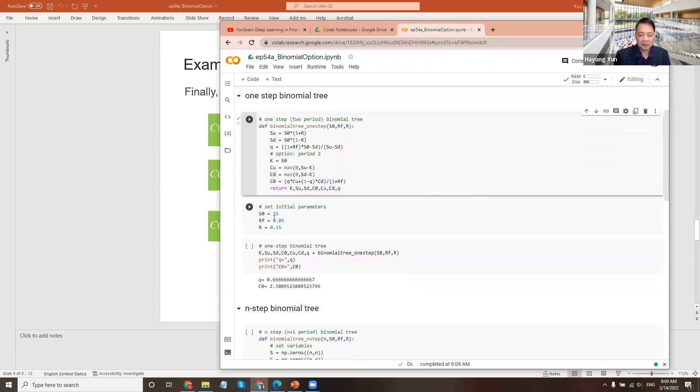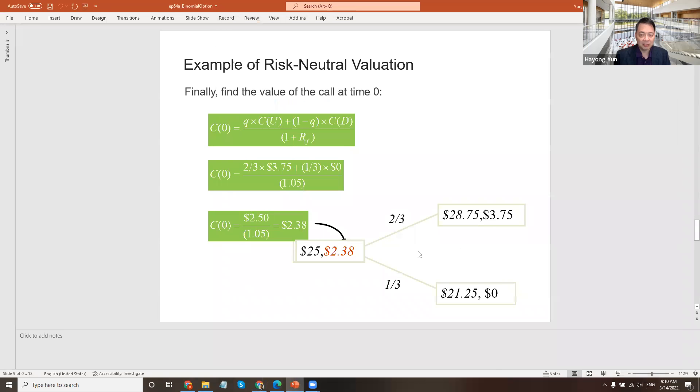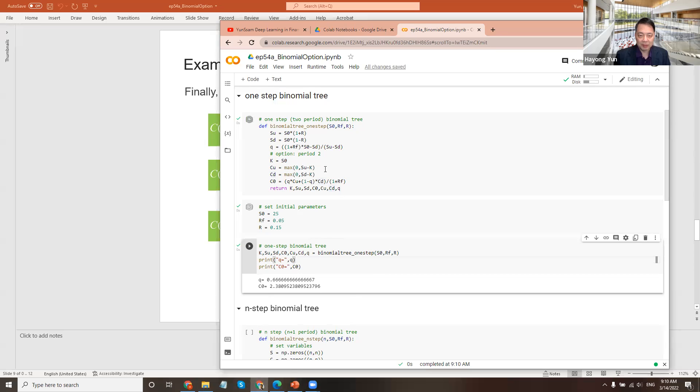Can we test this? Initial value $25, risk rate 5%, R 15%. Let's call this binomial tree one step function. The answer: Q equals 0.6667, which is two-thirds, just as we did by hand. The initial option value is $2.38, just as we calculated. This is how you implement in Python a binomial option.